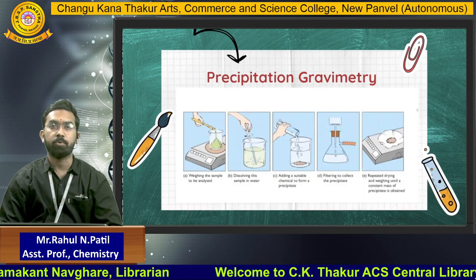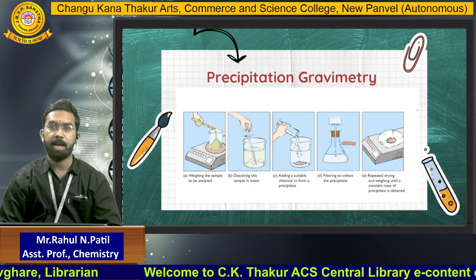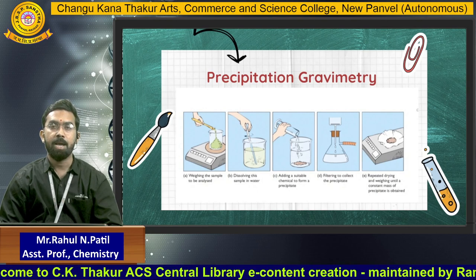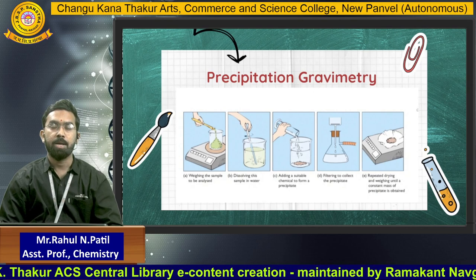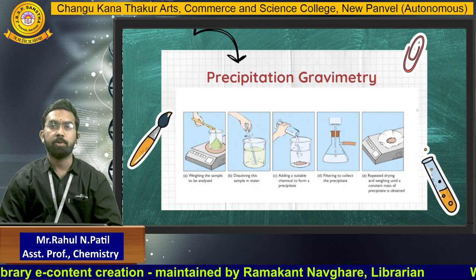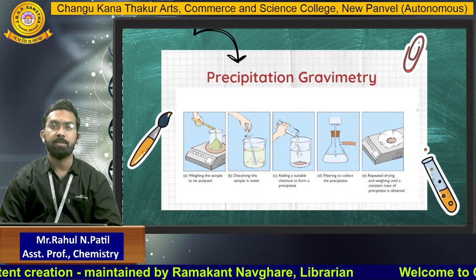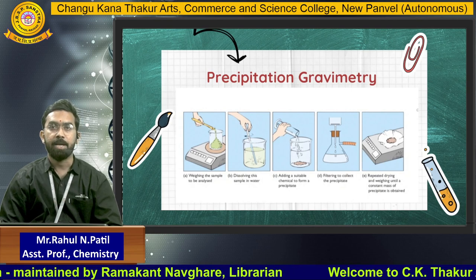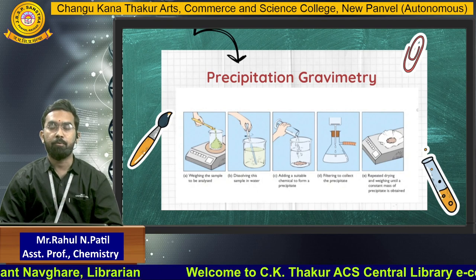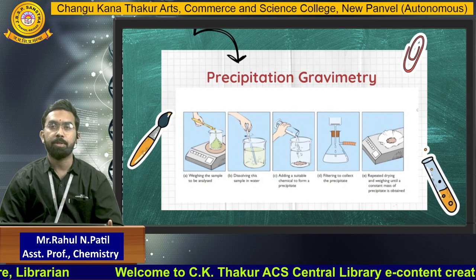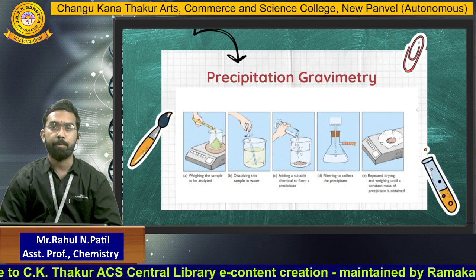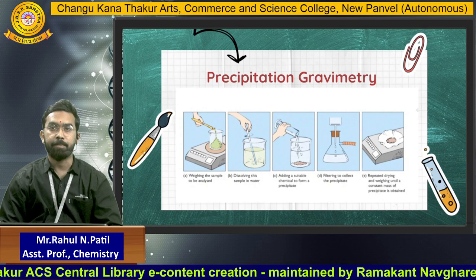The procedure for precipitation gravimetric analysis: first, prepare the sample and add the given compound or solution — this starts forming the precipitation. After forming, keep it in a water bath to complete the digestion process. After 25-30 minutes, digestion is complete. Filter using a suction pump with Whatman filter paper number 41. Then place the dry product in an electric oven to dry it, and note down the weight using the weighing balance to determine how much precipitate was obtained.